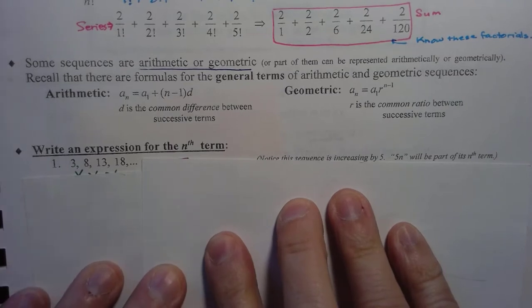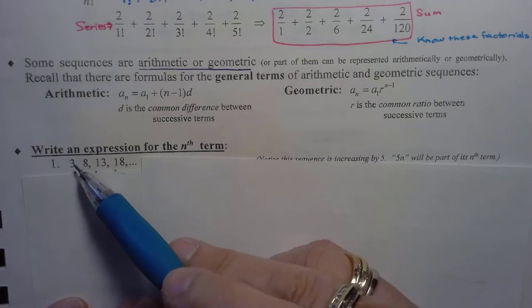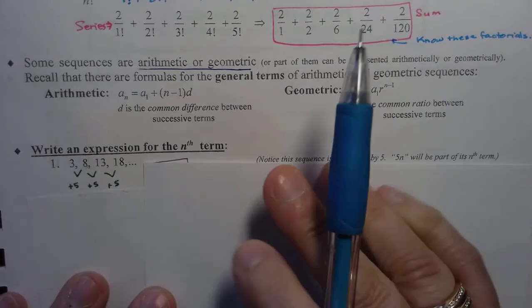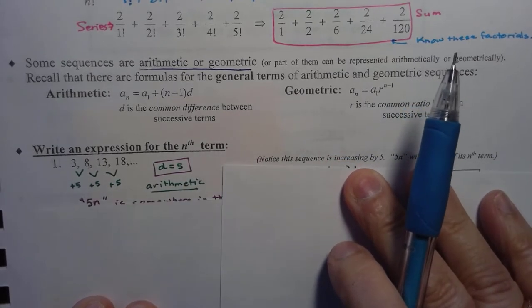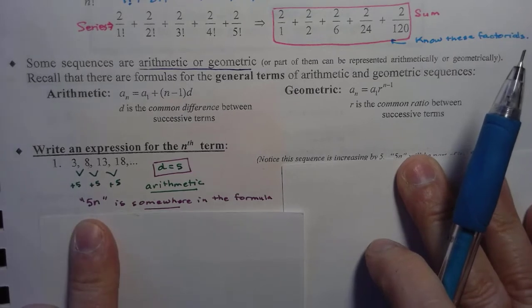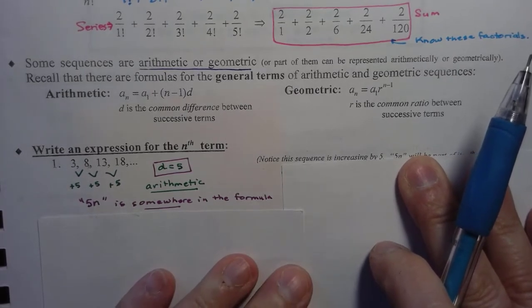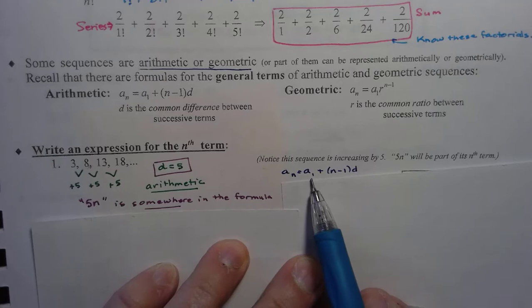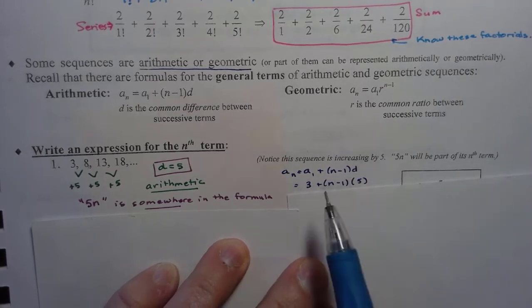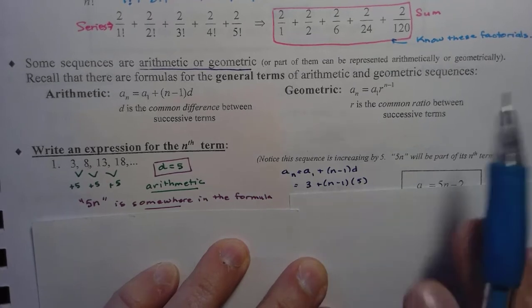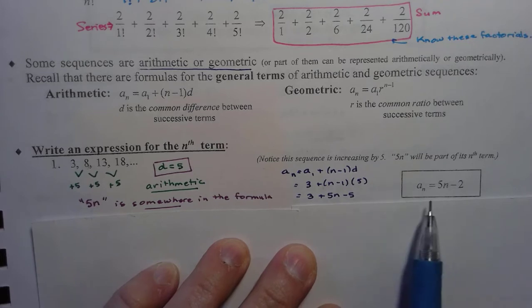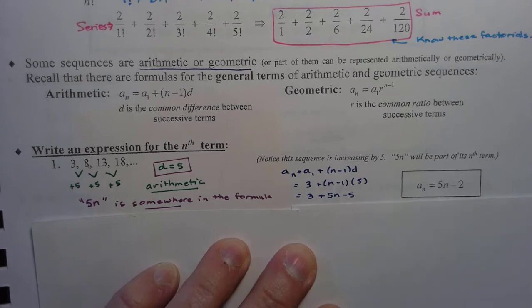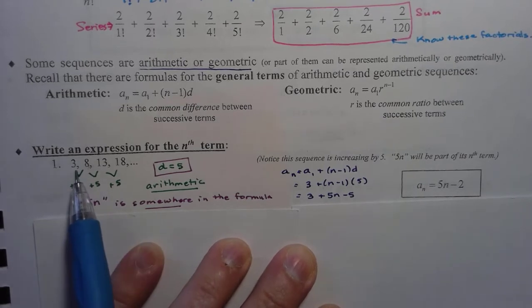Write an expression for the nth term. Notice it looks like the difference between these terms is 5, 5, and 5 — so that is our common difference. This is arithmetic. When we have a common difference of 5, that means 5n will appear somewhere in our formula. So my general formula is A sub n equals A sub 1 plus n minus 1 times d, which gives us 3 plus n minus 1 times 5. Distribute the 5, combine similar terms, and here is the formula for my nth term. For example, the third term: 5 times 3 is 15, minus 2 is 13. And my third term is indeed 13.